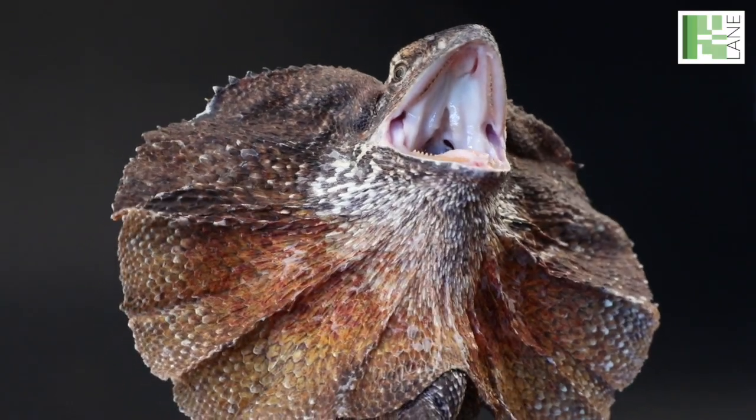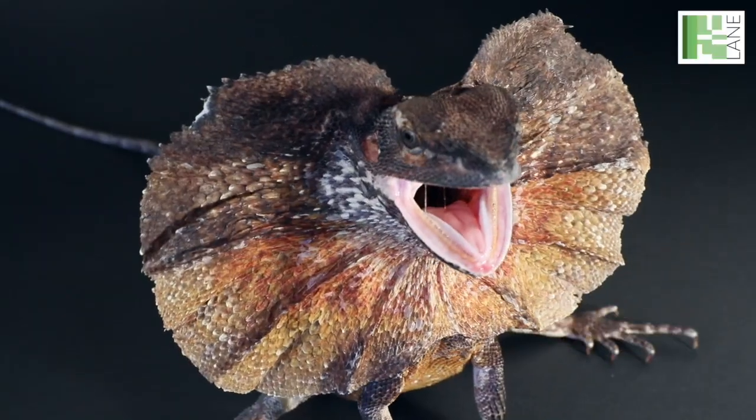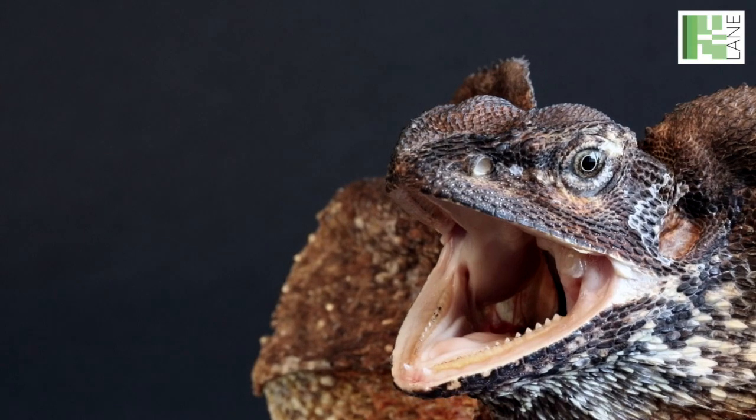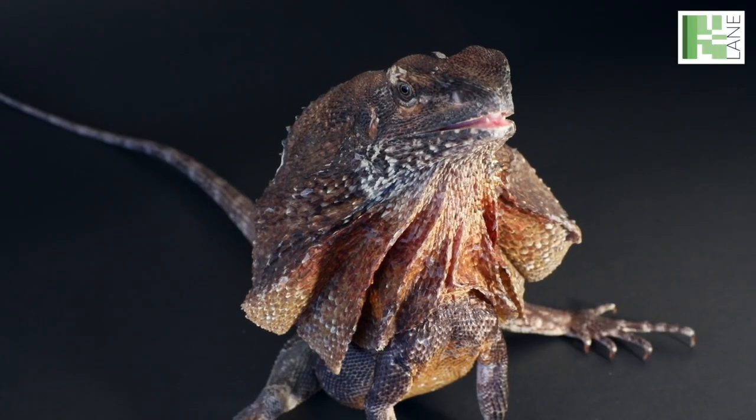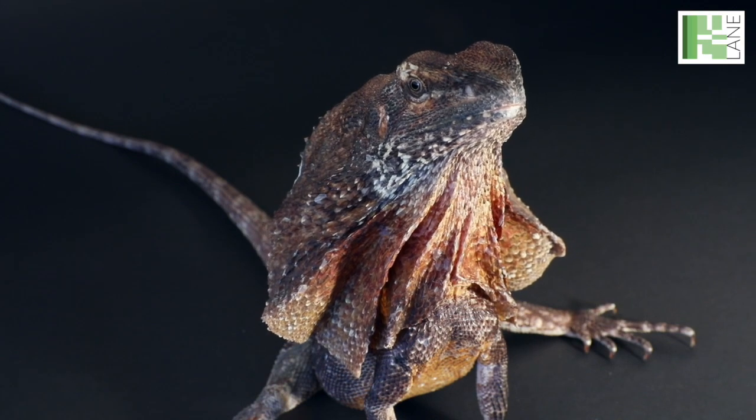The Frilled Dragon, also known as Klamytosaurus kingi, have a large disk of skin that sits around their head and neck. This frill can erect in a spectacular fashion to scare off predators and competitors.